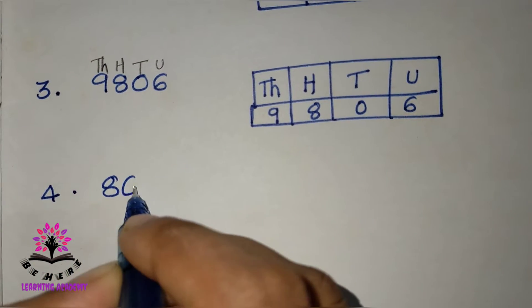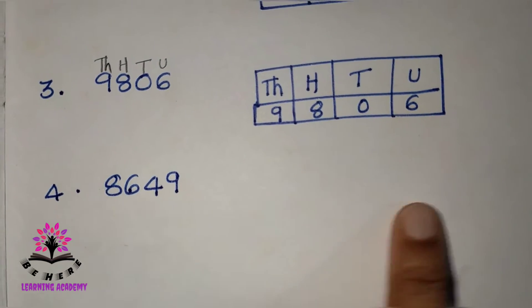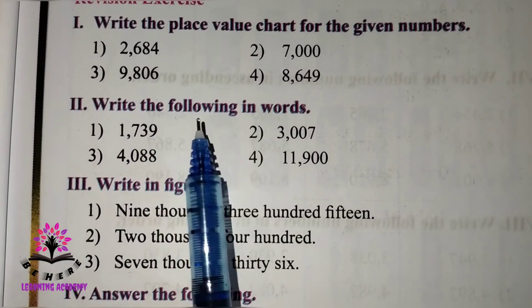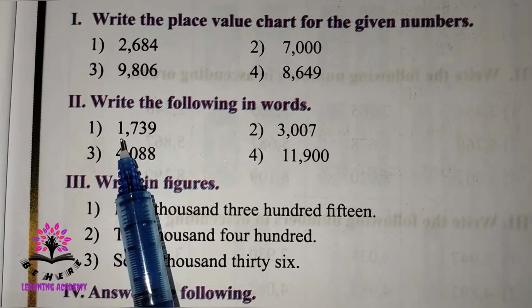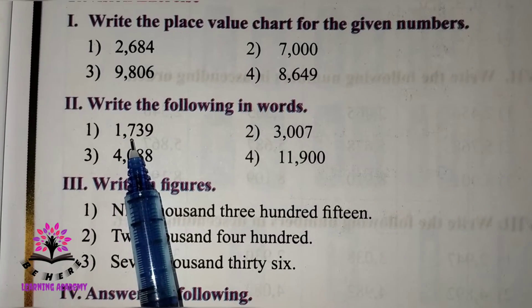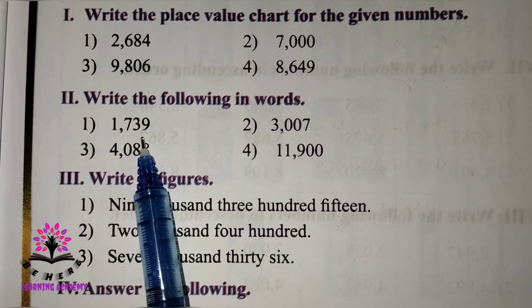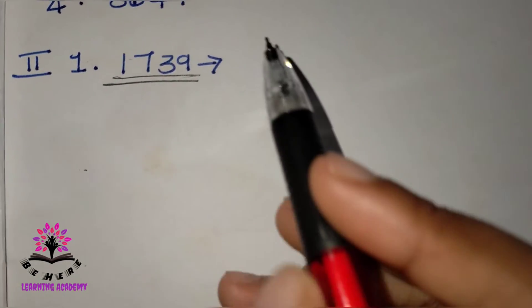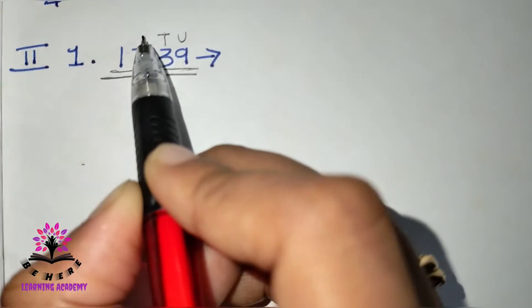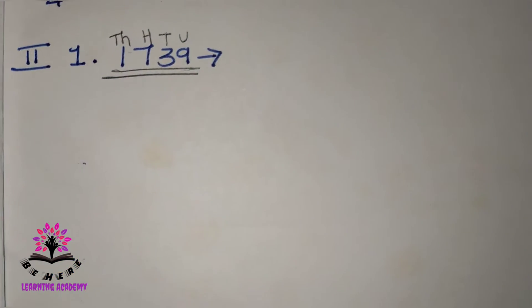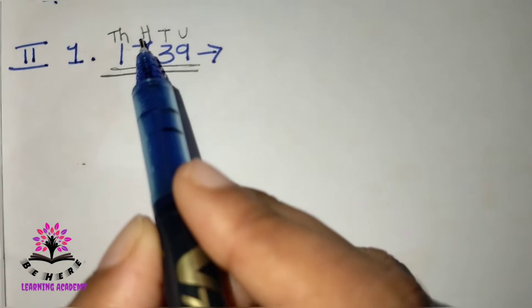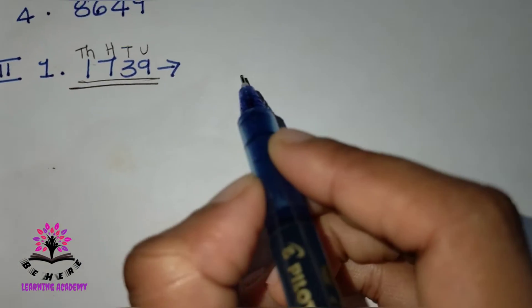The last question is eight thousand six hundred and forty-nine — do it by yourself. See the second section: write the following in words. The first question is one thousand seven hundred and thirty-nine. To write in words, first identify the places: units, tens, hundreds, thousands. You can read this as one thousand seven hundred and thirty-nine.